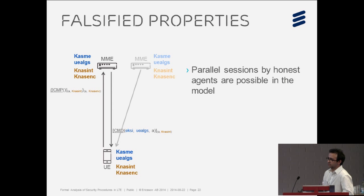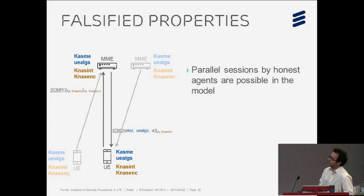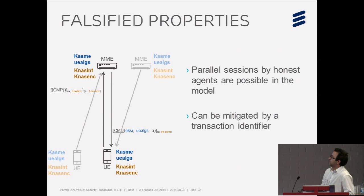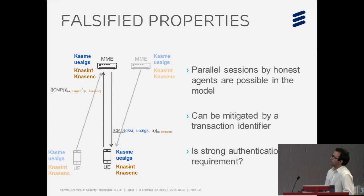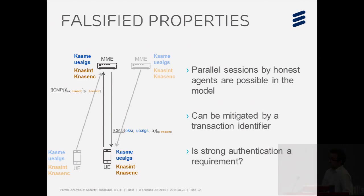In the message, there is nothing that binds the session to a unique identifier. The same problem exists on the other side: the MME cannot tell from which session the reply came. This could be mitigated by a transaction identifier or a nonce — something unique generated for each session. However, since we assume the core network is trusted and all nodes there are honest, it is very unlikely an honest MME would run parallel sessions with the same parameters, and this does not affect secrecy at all.